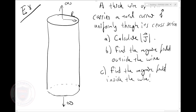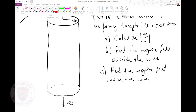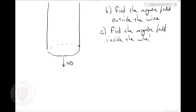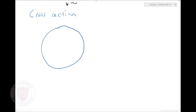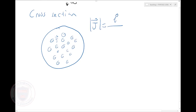Let's start from part (a). The definition of current density J is current divided by the cross-sectional area. If I draw a cross-section of this figure I'll see a circle with current coming towards me. Since the current is uniform, J equals total current I divided by the total cross-sectional area πR², so J = I / (πR²).